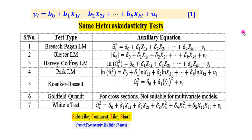Now let's consider some heteroskedasticity tests. There are many out there, but I have only considered 7 for this tutorial: Breusch-Pagan, Glejser, Harvey, Park, Cook-Weisberg, Goldfeld-Quandt, and White. Each of them has their own auxiliary equation.